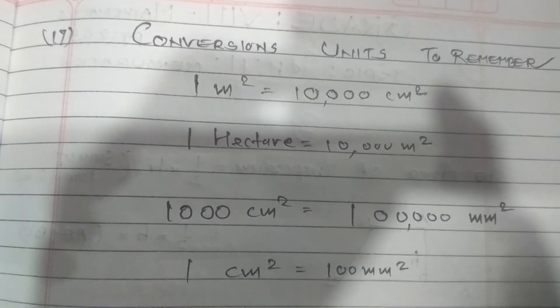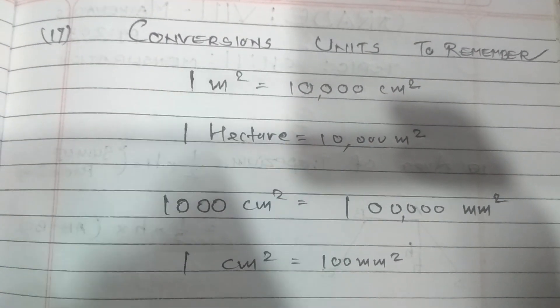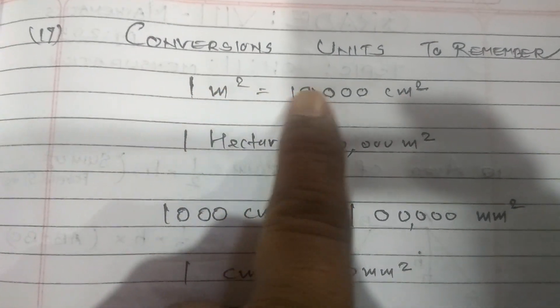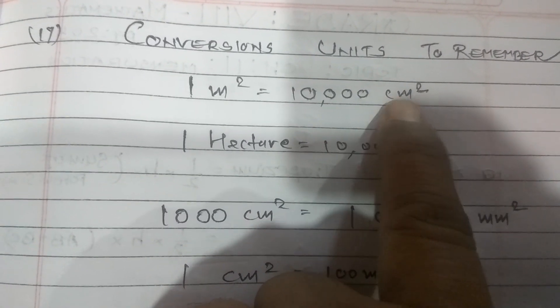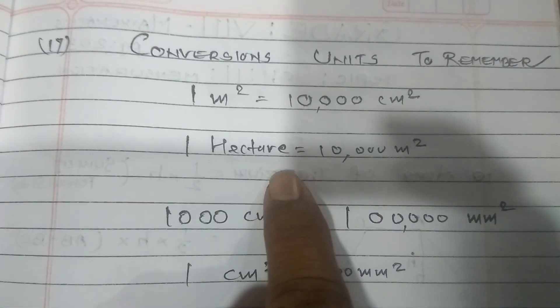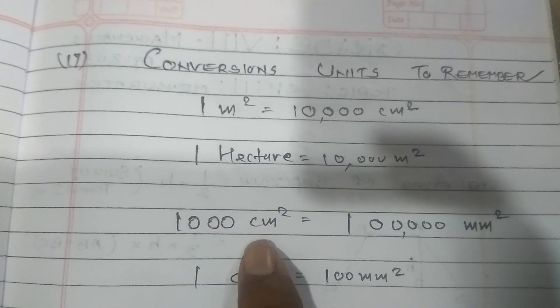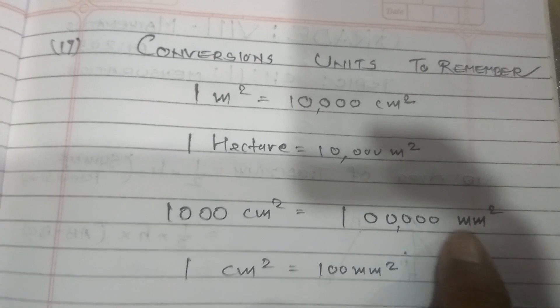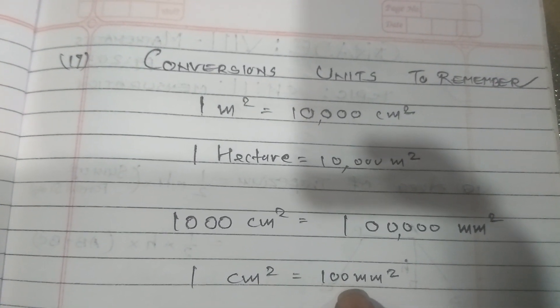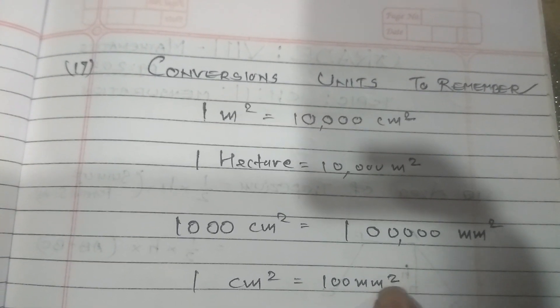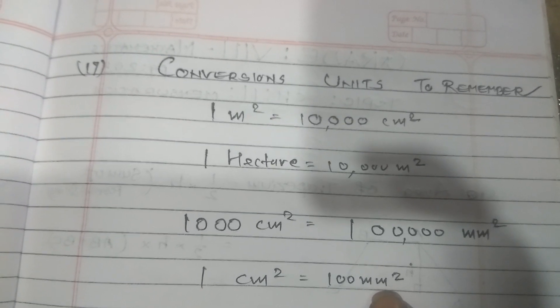Here we have to remember some conversion units also. 1 meter square, 1 meter is equal to 100 centimeter. So 1 meter square means 100 into 100, means 10,000 centimeter square. 1 hectare is also equal to 10,000 meter square. 1000 centimeter square is equal to 1 lakh millimeter square. And 1 centimeter square is equal to 100 millimeter square. Because 1 centimeter is equal to 10 millimeter, so 10 into 10, that is 100.